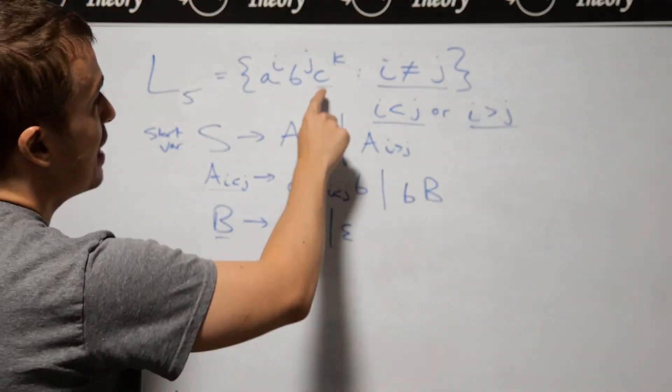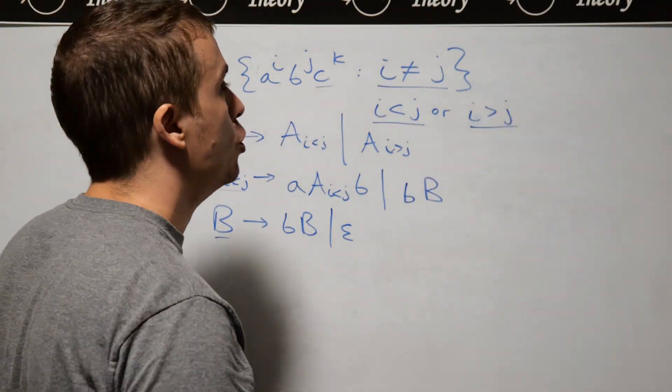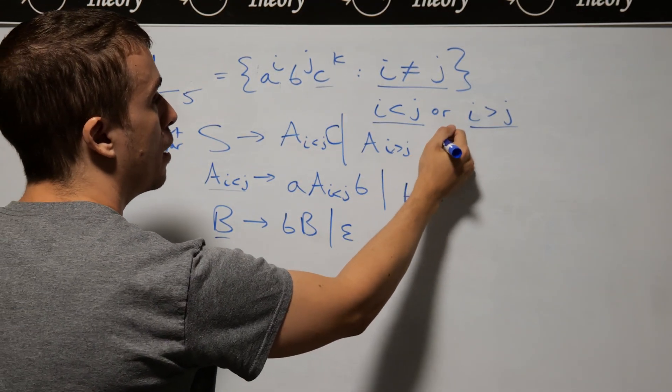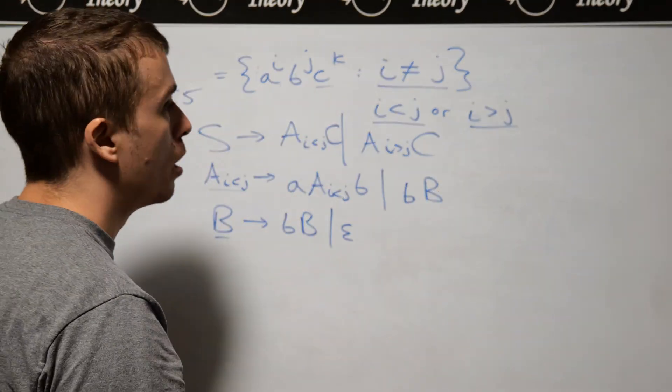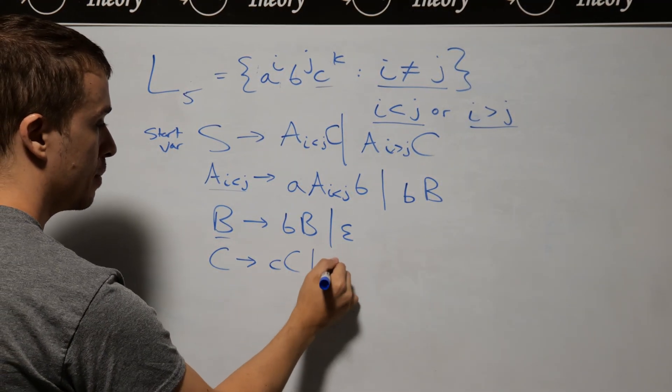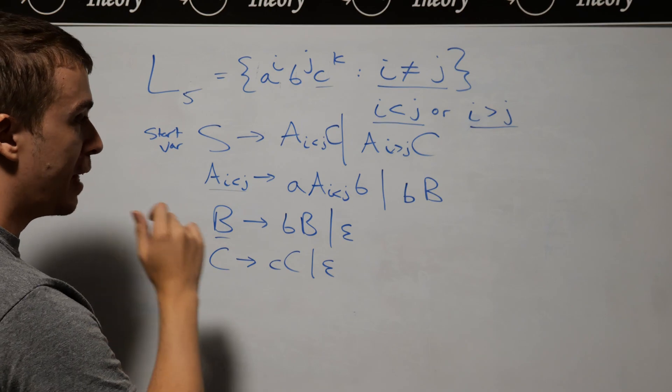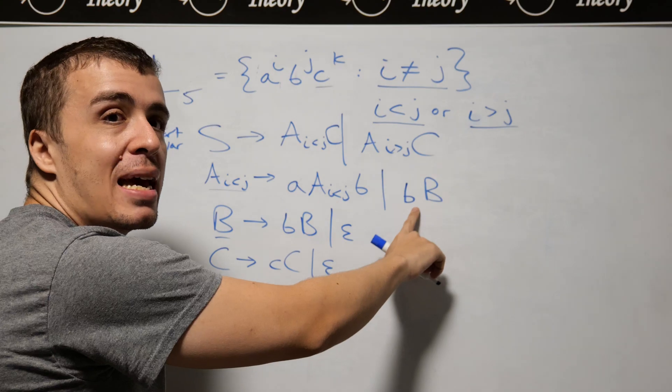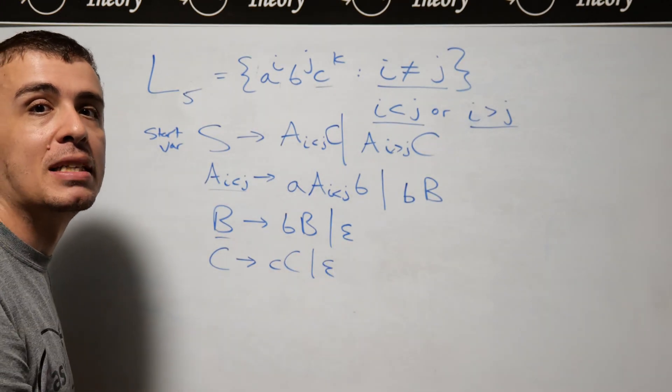Now we need to deal with the C's at the end. They don't have any relation to the i and j numbers. One easy way is to have a variable that goes after both of these, because the C's condition doesn't depend on the A's and B's at all. I'll have a variable C here which just generates C's and nothing else, exactly like the B variable but for a different purpose. That handles the i < j case - we have equal numbers, and I guarantee at least one more because of this rule. If we need more, I can apply this rule as many times as I want.